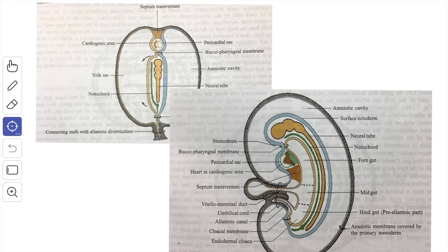The embryos of reptiles, birds and mammals possess an amniotic cavity, hence they are named as amniotes. Fishes and amphibians are devoid of an amniotic cavity and they are called anamniotes.